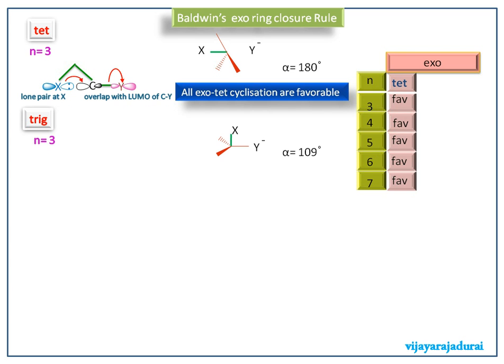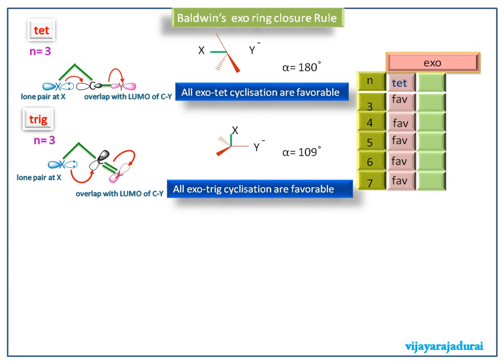For this we consider N equals 3 molecule. This is a structure of trig hybridized molecule if N equals 3. Here the lone pair at X can attack the LUMO of CY at 109 degrees, which will be a favorable reaction. Here also all exo trig cyclizations are favorable reactions.